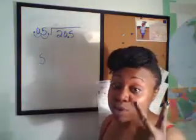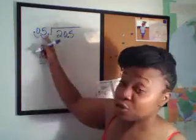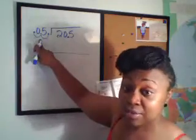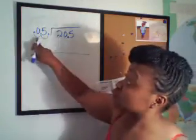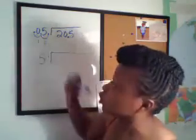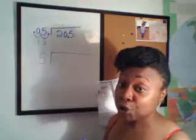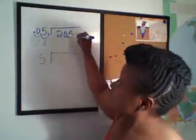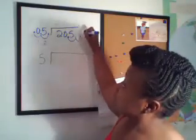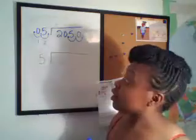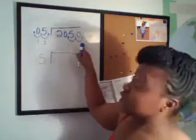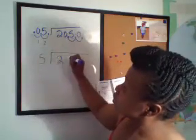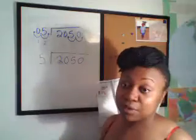I moved my decimal over two decimal places until .05 became a whole number. Same thing I do outside the box in the divisor, I must do inside the box. Since I moved two decimal places — one, two — to turn .05 into a whole number, I'm going to do the same thing in the box, moving over two spaces. Now my dividend becomes 2,050 because I moved over two spaces. Now I can divide normally.